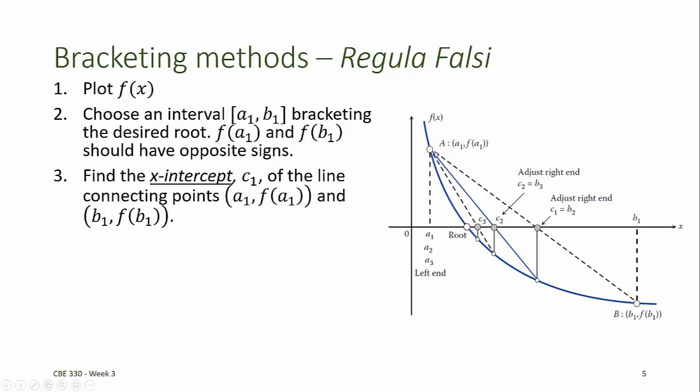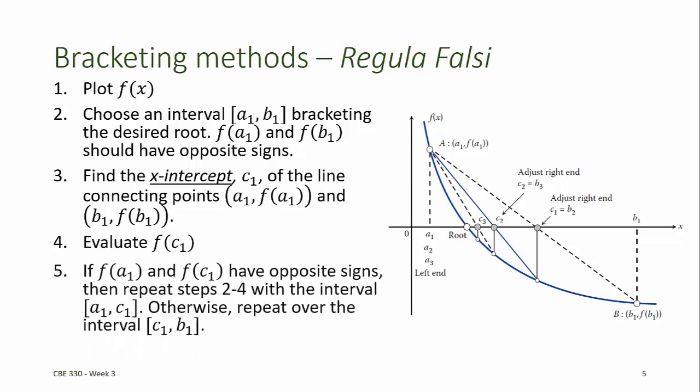and b1, f at b1. The intercept of that line is our first estimate for the root, we call c1. Next, we evaluate f at c1, and similar to the bisection method,